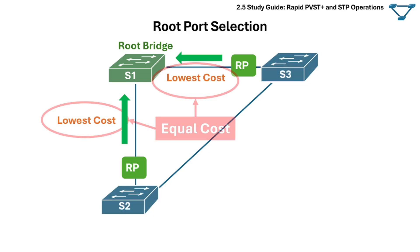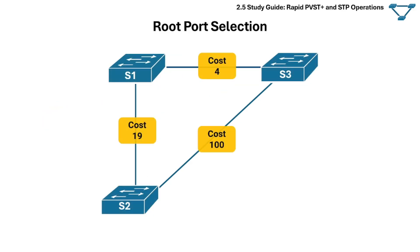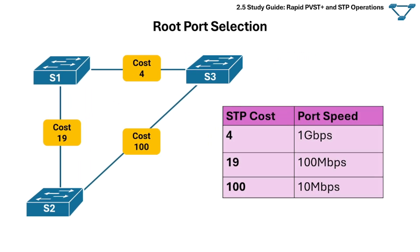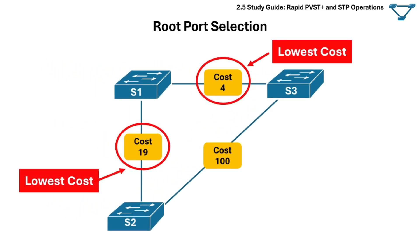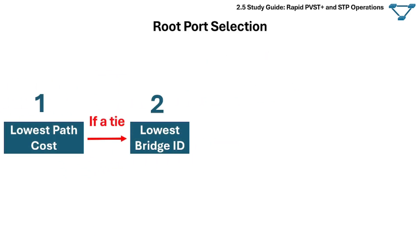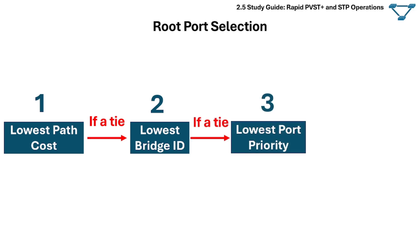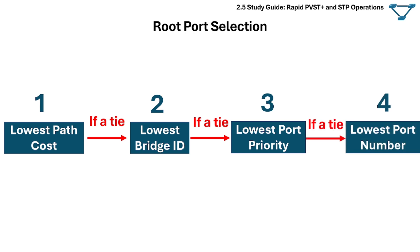What if two paths have equal cost? Switches exchange BPDUs that include a value called the root path cost. Port cost depends on the speed of the port — faster ports have lower cost. In case of a tie, the switch chooses the port with the lowest path cost. If the cost is the same, choose the port that received the BPDU from the switch with the lowest bridge ID. If multiple ports connect to the same switch, choose the one with the lowest port priority; if port priority is also equal, pick the one with the lowest port number.